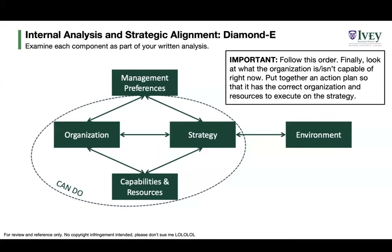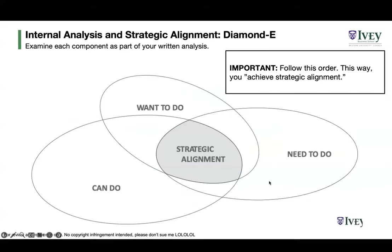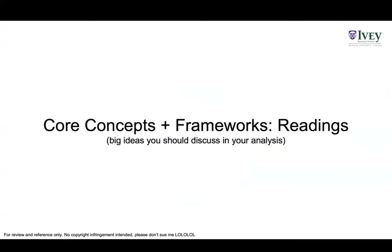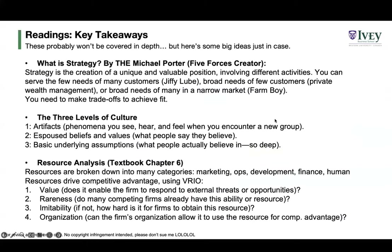The idea is to achieve strategic alignment by looking at these three tensions. The main entry to the course is 'What is Strategy?' by Michael Porter — he created the Five Forces. The goal is to create a unique and valuable position using different activities. You could serve the few needs of many customers like Jiffy Lube, the broad needs of a few customers like managing all finances for a very wealthy person, or the broad needs of many in a narrow market like Farm Boy serving wealthy urban pockets where people want organic products.